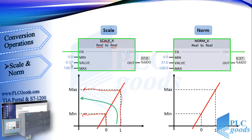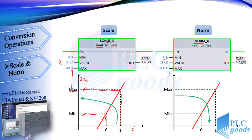For example, here 0.37 is converted to 37, or this program will convert number 2 to 200. The Norm instruction works like Scale but inversely — for example, it converts 37 to 0.37.